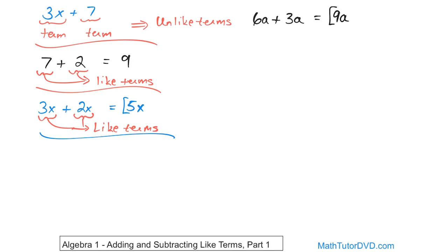What if you have 2a plus b plus 6a? How do you simplify this? You see you have two a's here and six a's here, so those terms are like terms. But b is completely different — it's unlike those two. I can still add the like terms: 2 plus 6 is 8, carrying the a along. But I still need to write plus b because I can't do anything with it — this b is unlike the a terms. So the final answer is 8a plus b.